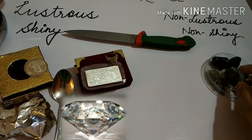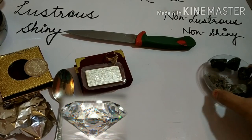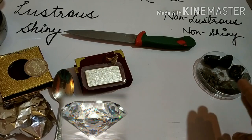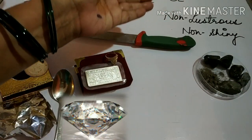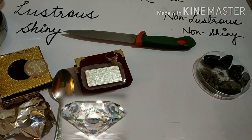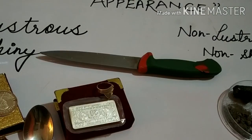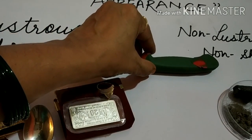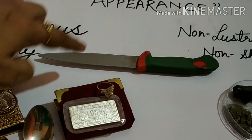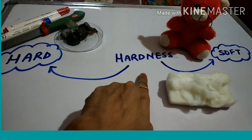When we talk about pebbles — 'pathar' — or a piece of wood, or sand, or 'mitti', you will find there is no shine in them. So when there is no shine, it is known as non-shiny or non-lustrous. On the basis of appearance, things can be classified as lustrous and non-lustrous. For example, the front portion of a knife is shiny or lustrous, whereas the back portion is non-lustrous. So a knife is the best example.